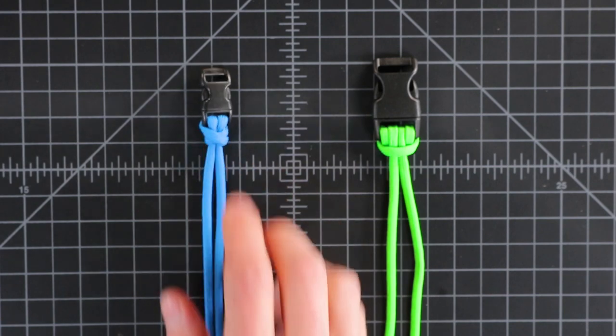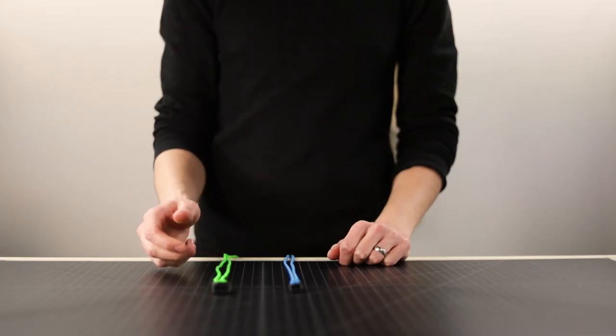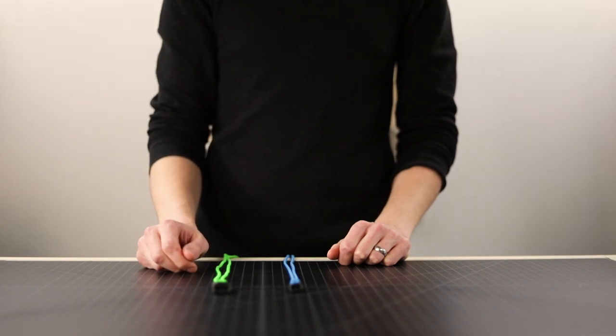So I've got here a bull hitch and a form of a prusik knot or prusik hitch. They're both very similar to a cow's hitch. So let's dive right in.